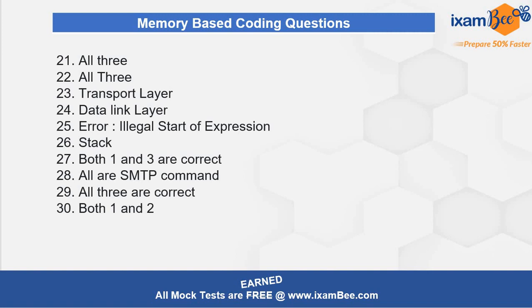Now it's time for all the answers — evaluate yourself and mark your attempts against the correct answers. Do mention in the comment section how much you got. If you are getting 1 to 5, you need to revise all the topics asked in these 10 questions — it's high time to revise or even learn them if you have no idea. If you are getting 6 to 7, you are average and need to strengthen the concepts. If you are getting 8 or above, you are doing well, but focus on the areas where you went wrong.